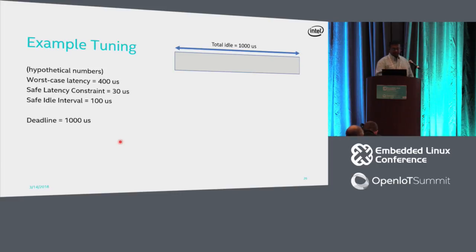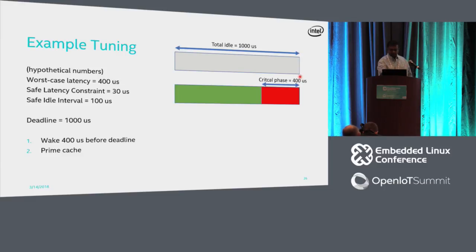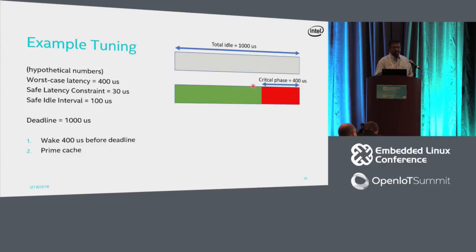Now let's look at a practical tuning example. We have a deadline at 1000 microseconds — we have time to idle, but at the end of 1000 microseconds the response must be reliable and right on time. If we wait the full 1000 microseconds with all restrictions removed, deeper C-states will enter and cause jitter. We know the worst-case latency is 400 microseconds, so we can use that knowledge to wake up that much time before the deadline.